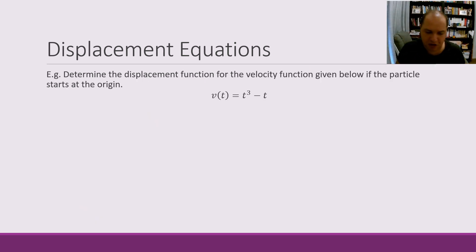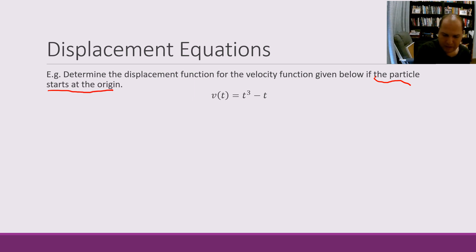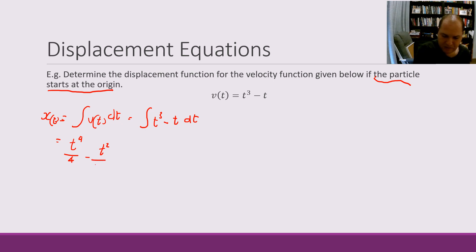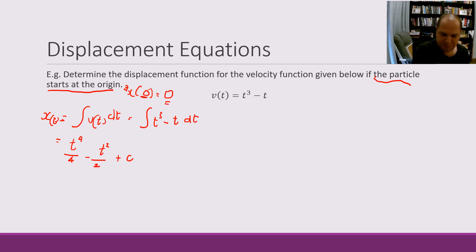Let's apply this in an example: determine the displacement function if the velocity function is given and the particle starts at the origin. So we know our displacement equation x(t) is going to equal the integral of our velocity function with respect to time — that's the integral of t³ minus t dt — which equals t⁴/4 minus t²/2 plus c. From there we've got the start of our displacement equation. Since it starts at the origin, x(0) equals zero.